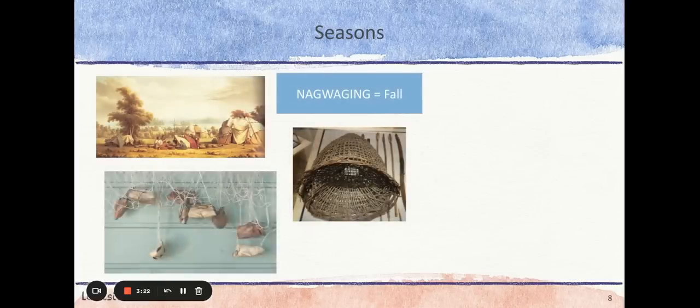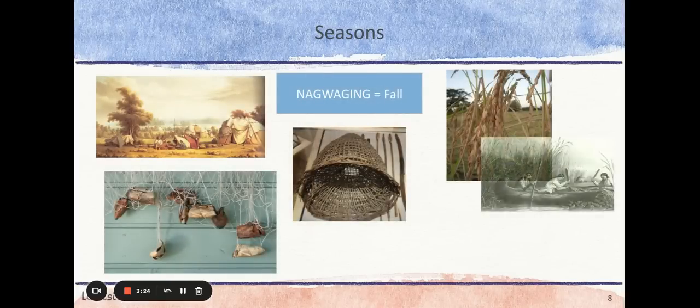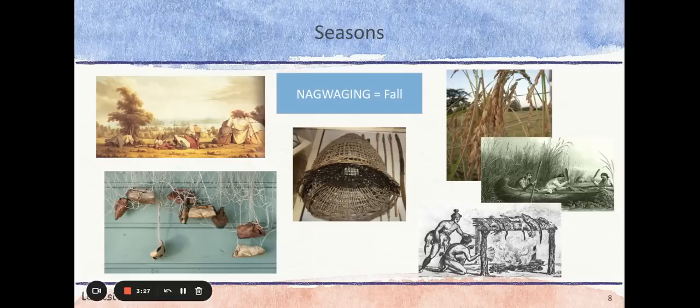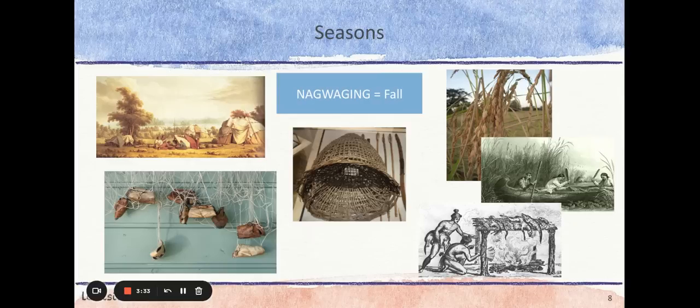Nagwagon, or fall, was a time to store up food for the difficult winter ahead. The Ojibwe moved their villages along the banks of the lakes and rivers where wild rice grew. The wild rice, which was unique to this region, was an important food source for the tribe throughout the year. The men of the tribe harvested the rice while the women dried and prepared the rice for cooking and storing.